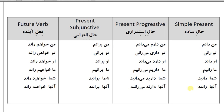حال استمراری (present progressive): من دارم می‌رانم، تو داری می‌رانی، او دارد می‌راند، ما داریم می‌رانیم، شما دارید می‌رانید، آنها دارند می‌رانند.